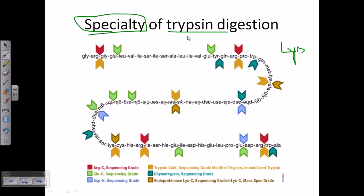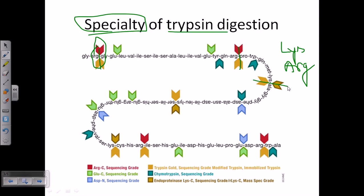Trypsin has a specificity — it can only cleave after lysine or after arginine. As shown with red arrows for arginine and gold for lysine, trypsin cleaves right after arginine or right after lysine. So wherever you see arginine or lysine in the sequence, that is the cleavage site. This is the specificity of trypsin that we utilize.